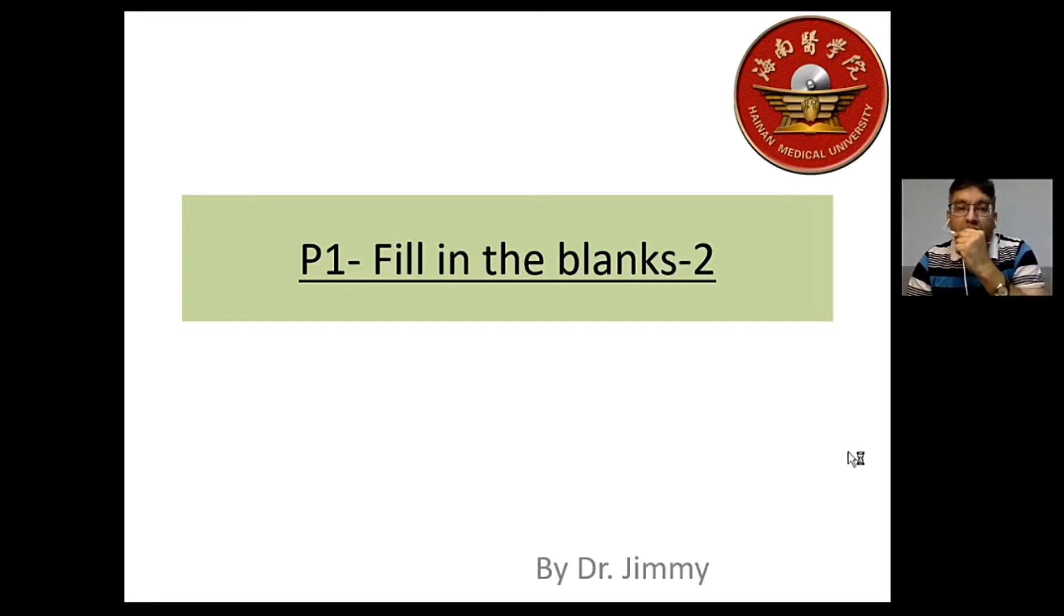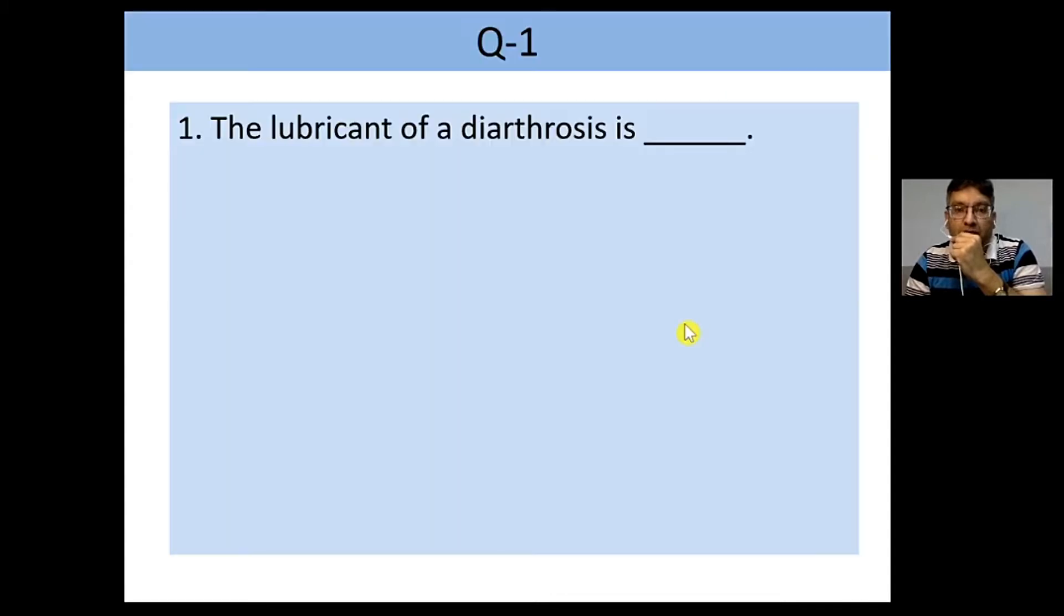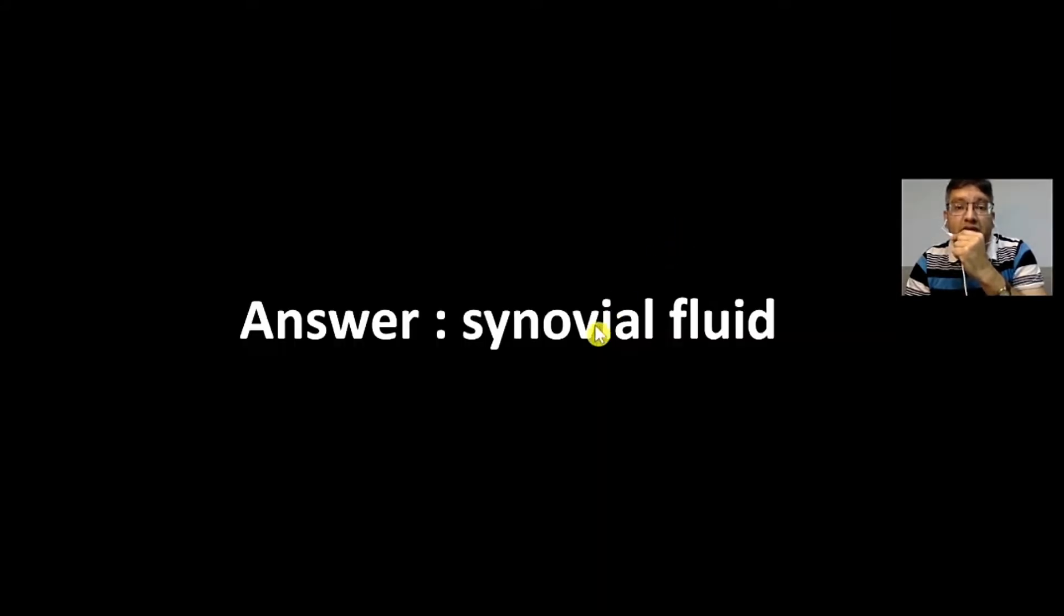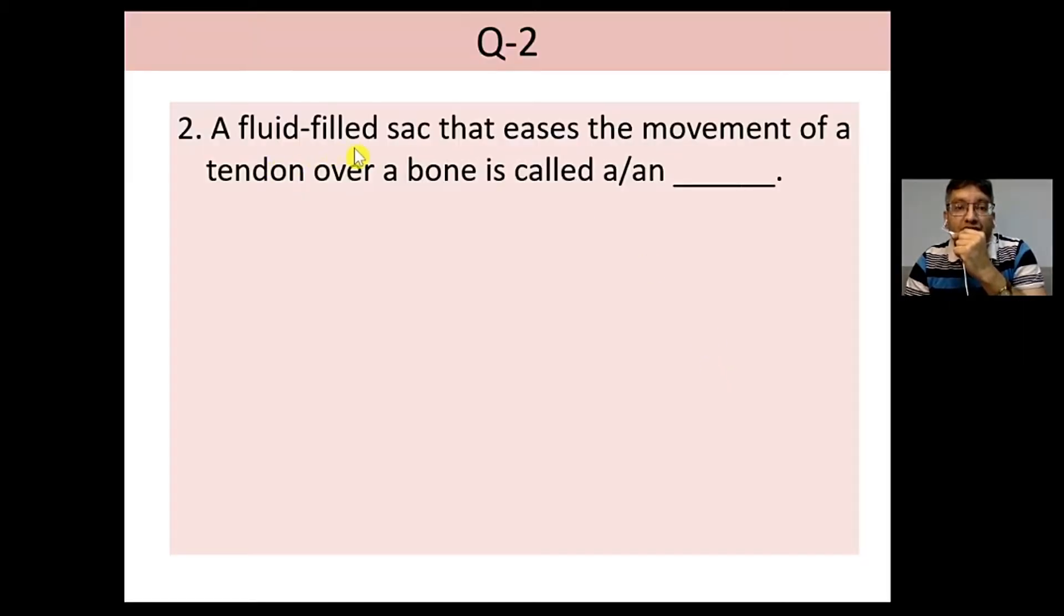Okay dear students, now we're going to learn about the fill-in-the-blanks part two for P1. The lubricant of a diarthrosis - diarthrosis are the synovial joints - so here would be the synovial fluid. A fluid-filled sac that eases the movement of a tendon over a bone is called a bursa.